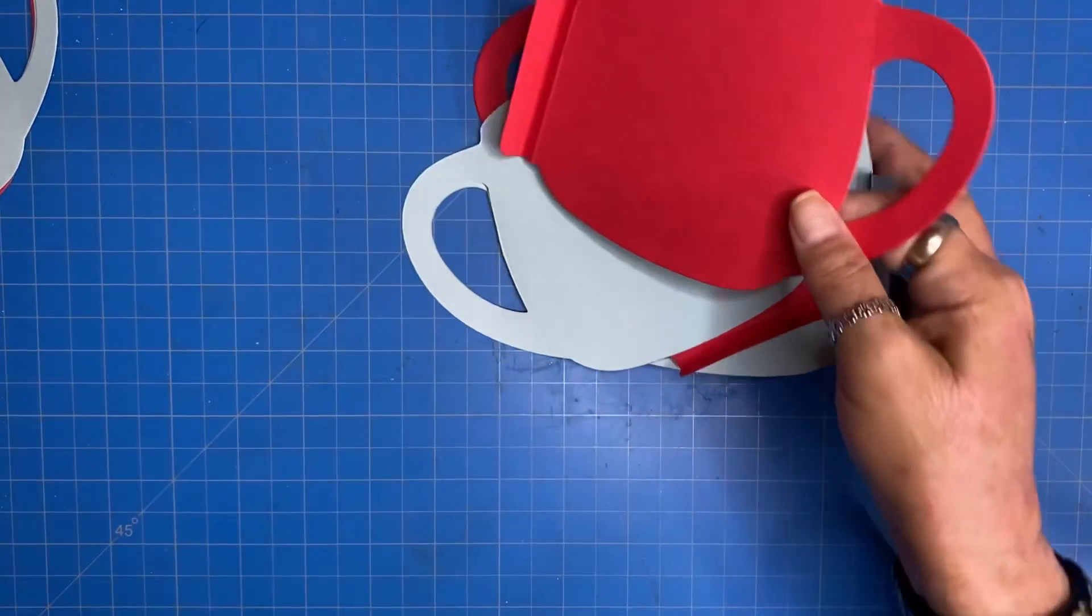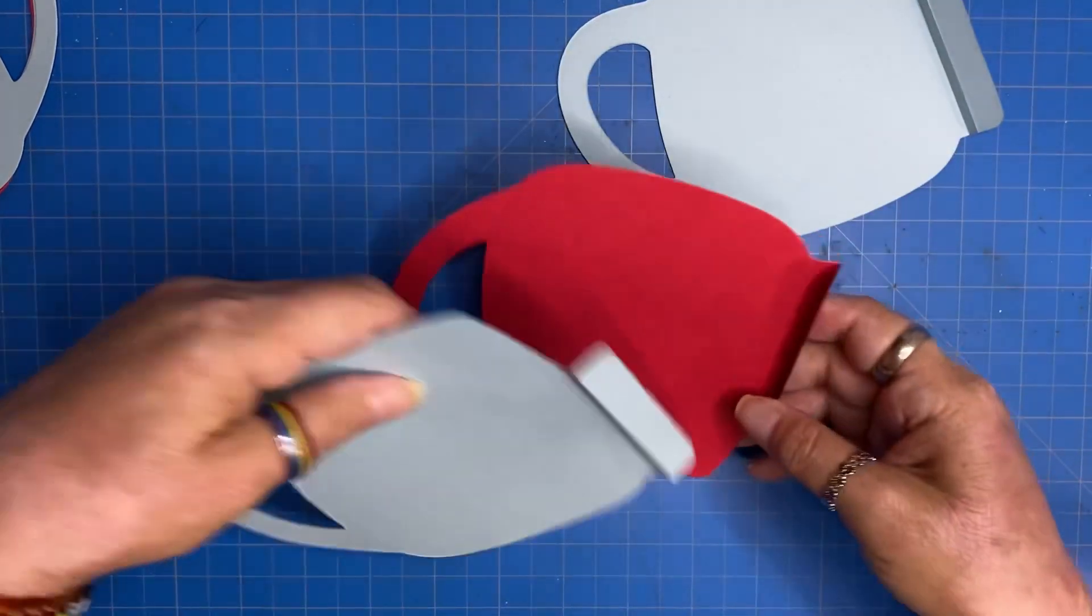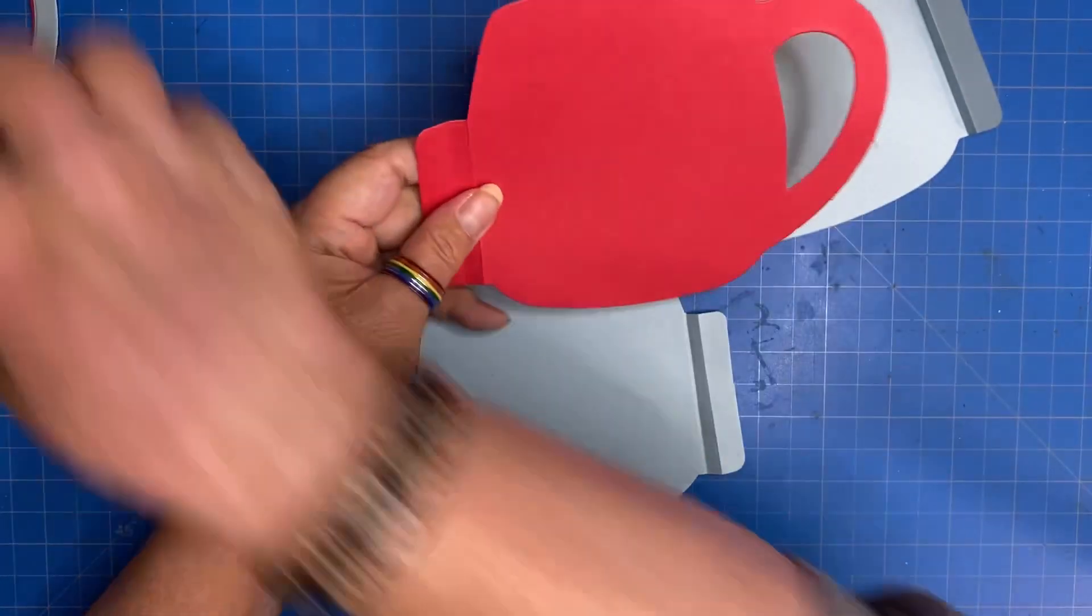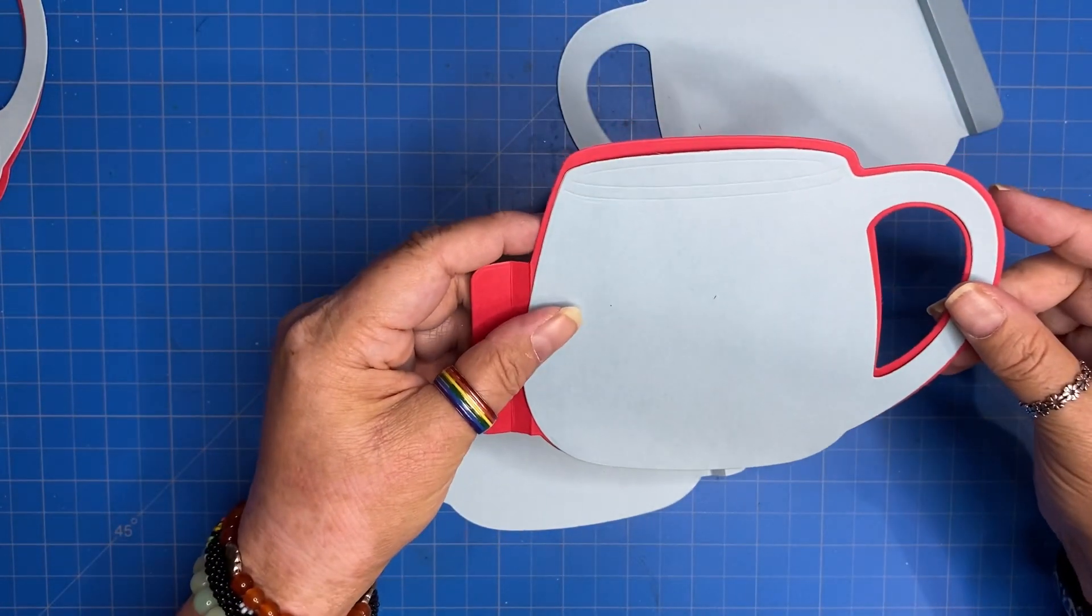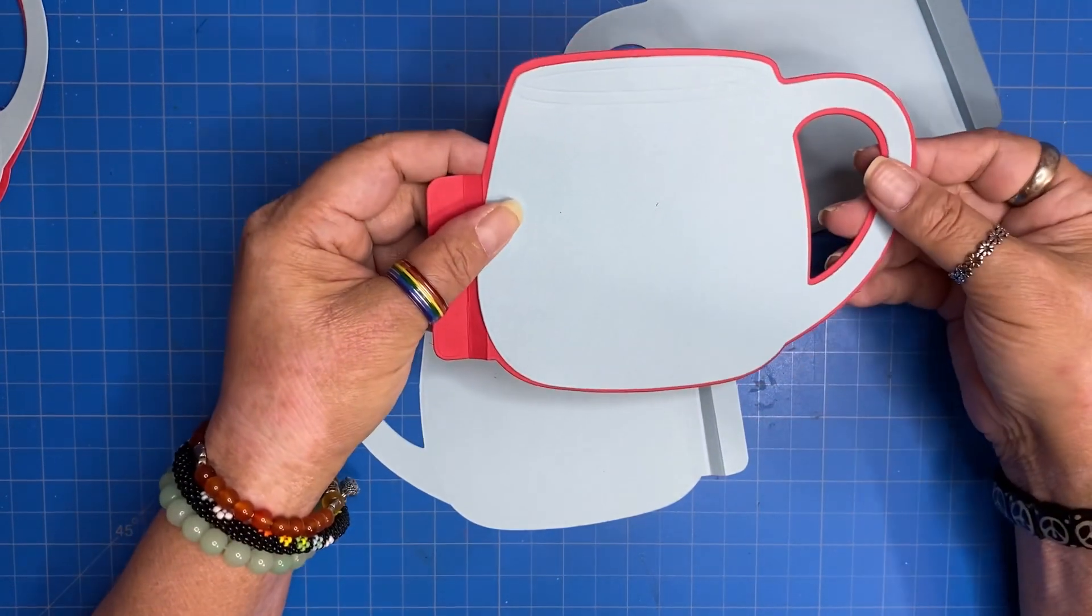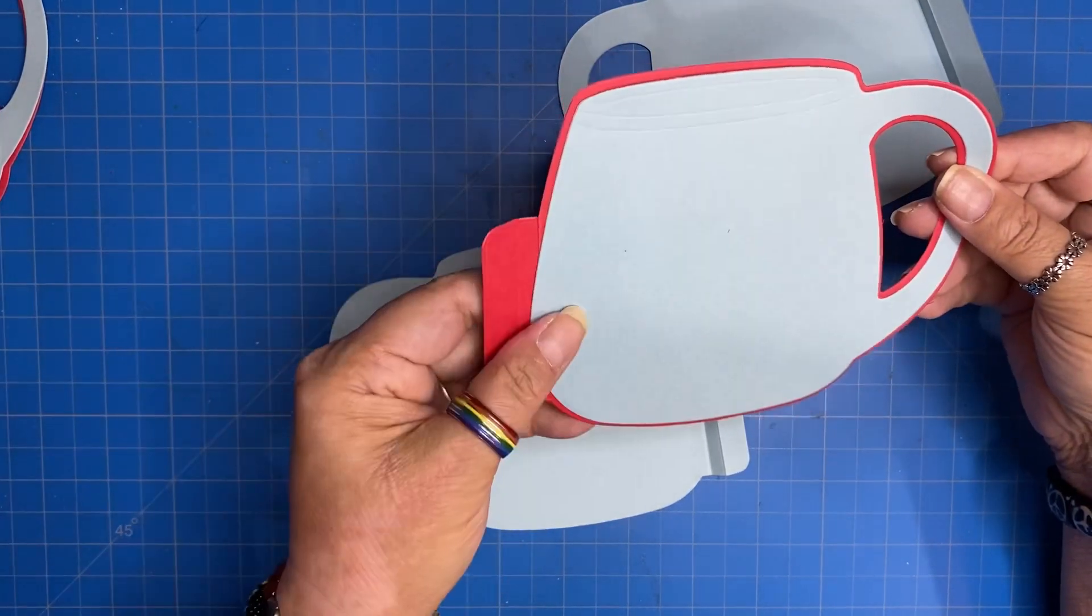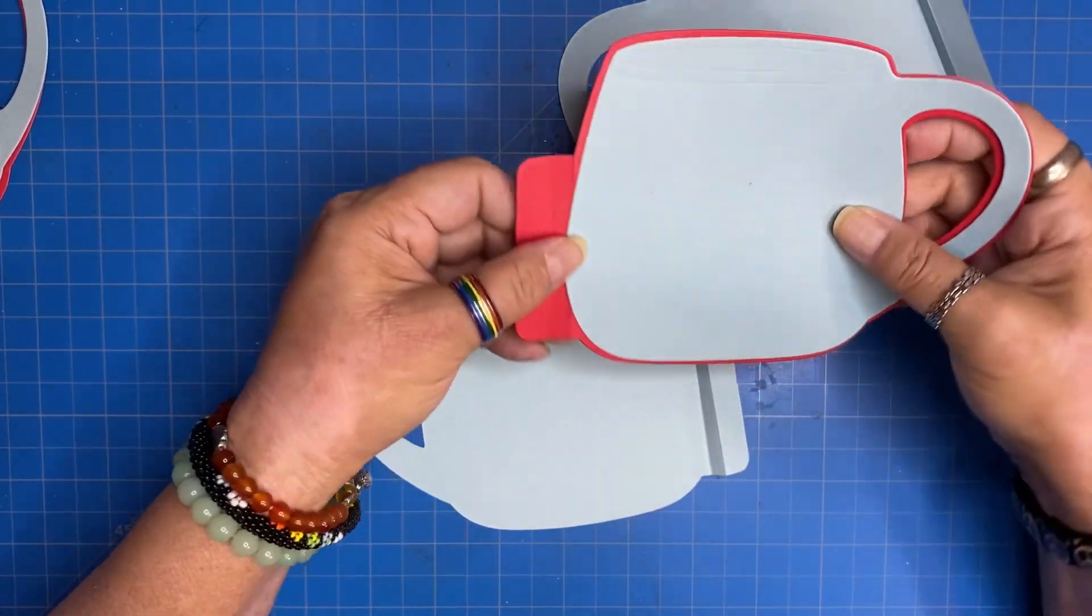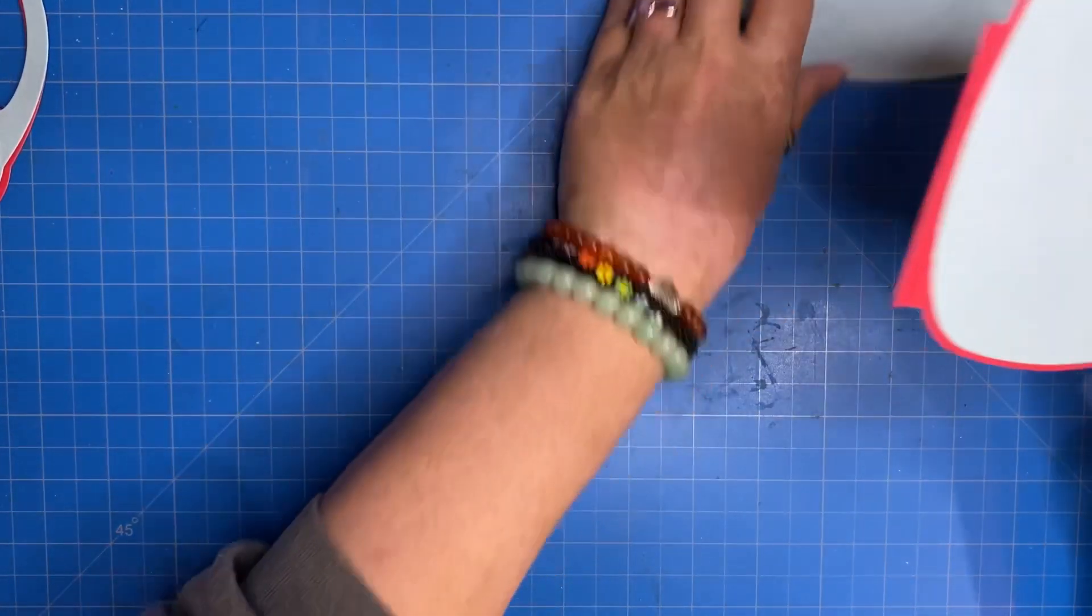Now, before we glue things together, just want to take a quick look at the layers. Now, depending on how you're going to decorate your book, you may want to go ahead and add your layers now. If you do, you'll just want to note that there is a bit of a bend in the paper here where you have a mat.